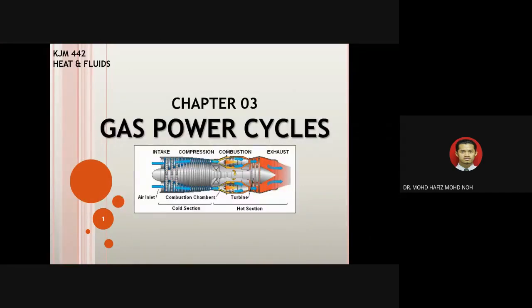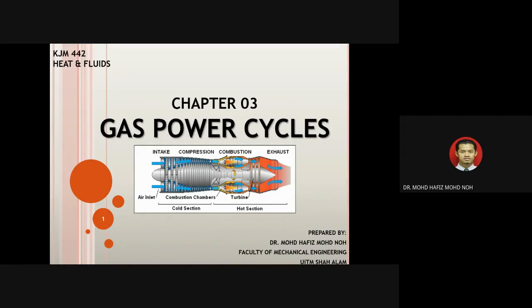Assalamualaikum warahmatullahi wabarakatuh. Good day to all students in KJM442. My name is Dr. Muhammad Afi, and today I will explain chapter three: gas power cycle. As you can see in the slide, there is a schematic diagram of a gas turbine engine. We call it a gas power cycle because we use gas to produce power. The engine has several parts: intake, compressor, combustion chamber, turbine, and exhaust.